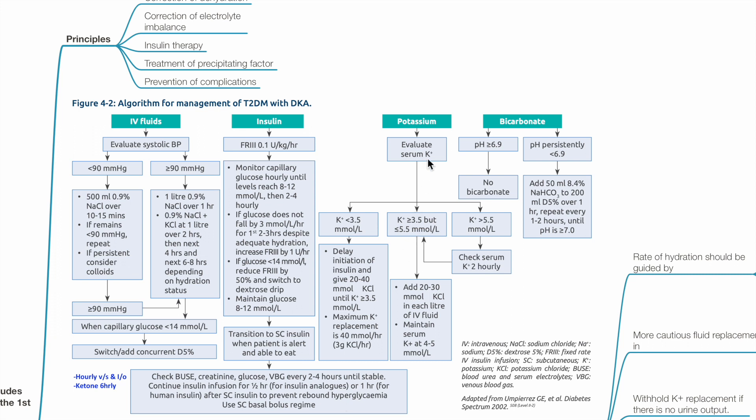Evaluate serum potassium levels. If serum potassium is more than 5.5, check serum potassium 2 hourly. If potassium is between 3.5 and 5.5, add 20-30 mmol of potassium chloride in each liter of IV fluid. Maintain serum potassium at 4-5 mmol per liter. If serum potassium less than 3.5, delay initiation of insulin. Give 20-40 mmol of potassium chloride until potassium is 3.5 or more. Maximum potassium replacement 40 mmol per hour.